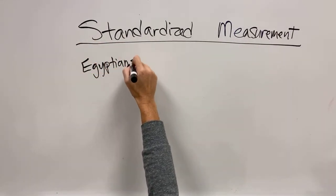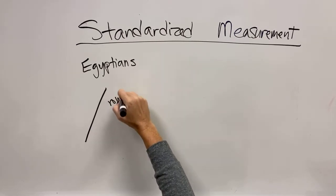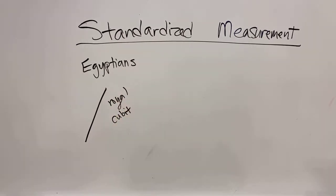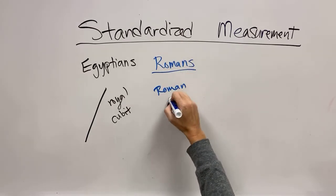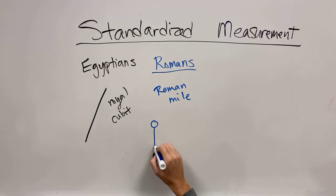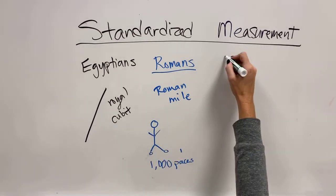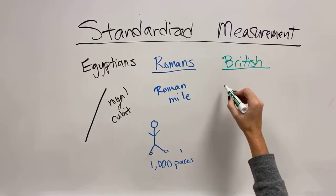So, early attempts at standardized measurement, a lot of them are known. The first one was from the Egyptians and they used a royal cubit to build the pyramids. So, everybody had a cubit stick and that's what they would use to build. The Romans had a mile that was a thousand paces and a pace is two steps. So, like right foot, left foot, and then when you stick your right foot down again, that would be a pace. And so, they measured things out in those Roman miles.